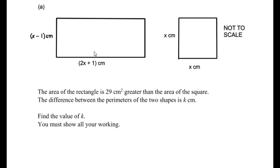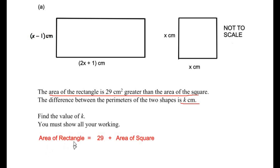The area of the rectangle is 29 cm² greater than the area of the square. The difference between the perimeters of the two shapes is k cm. Find the value of k and you must show all your working. The first thing we are going to do is to change the given statement into an equation: area of rectangle is 29 more than the area of square.